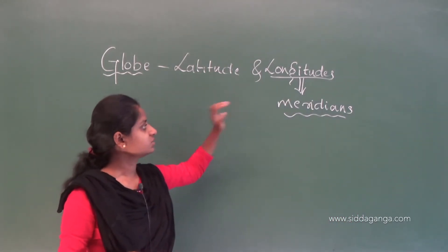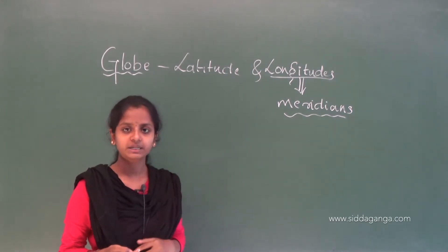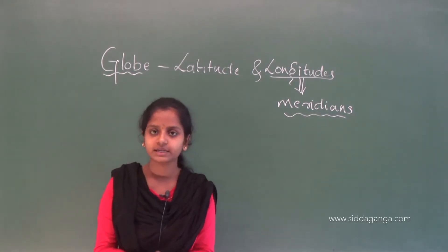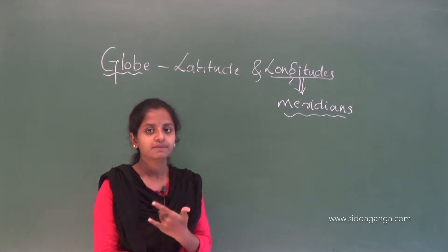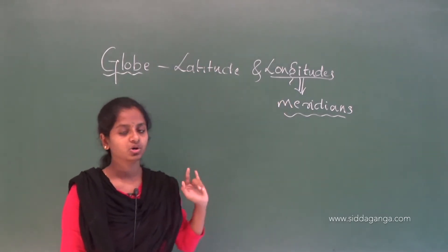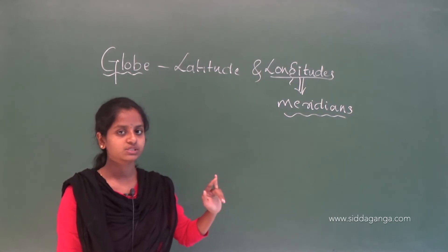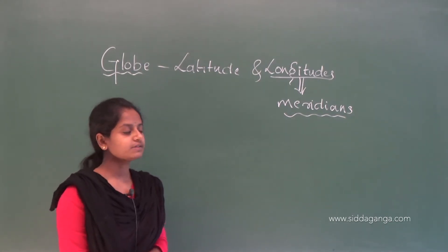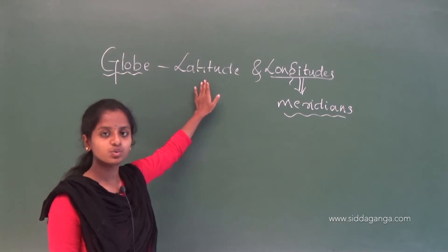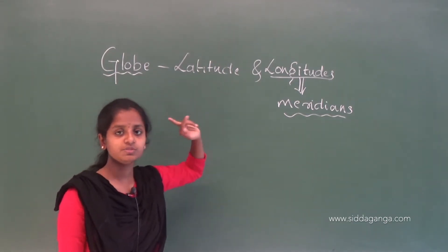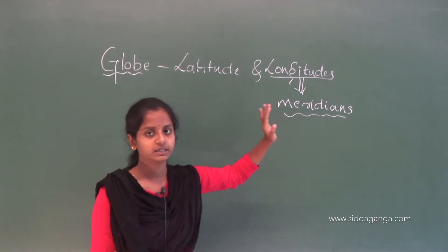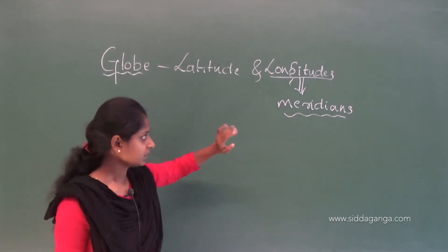To locate any point on the Earth's surface, we need both the latitudes and the longitudes. In the previous class, we called latitudes as parallels. Longitudes are called meridians.